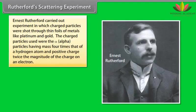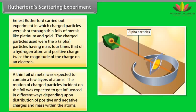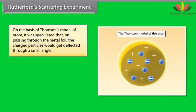Rutherford Scattering Experiment. Ernst Rutherford carried out experiment in which charged particles were shot through thin foils of metals like platinum and gold. The charged particles used were the alpha particles having mass four times that of a hydrogen atom and positive charge twice the magnitude of the charge of an electron. A thin foil of metal was expected to contain a few layers of atoms. The motion of charged particles incident on the foil was expected to get influenced in different ways depending upon distribution of positive and negative charges and mass within the atoms. On the basis of Thomson's model of atom, it was speculated that on passing through the metal foil, the charged particles would get deflected through a small angle.